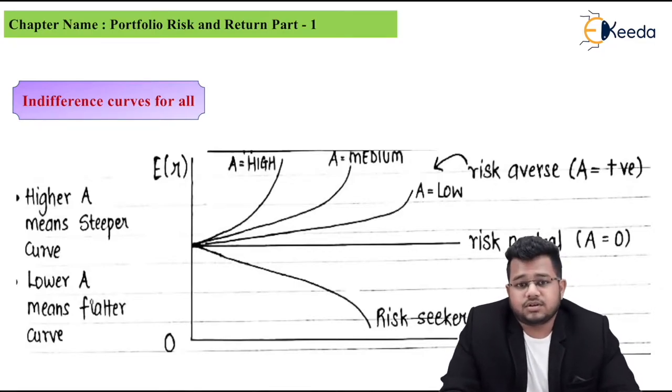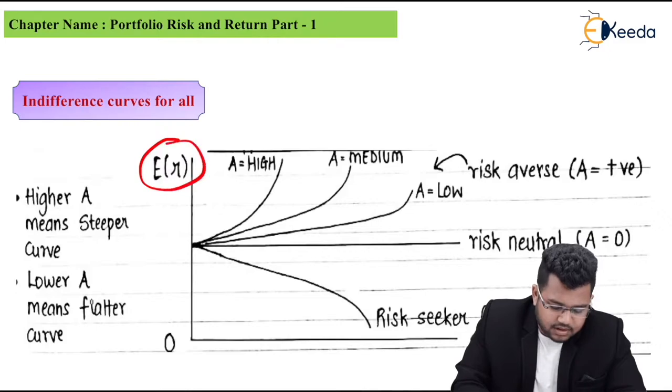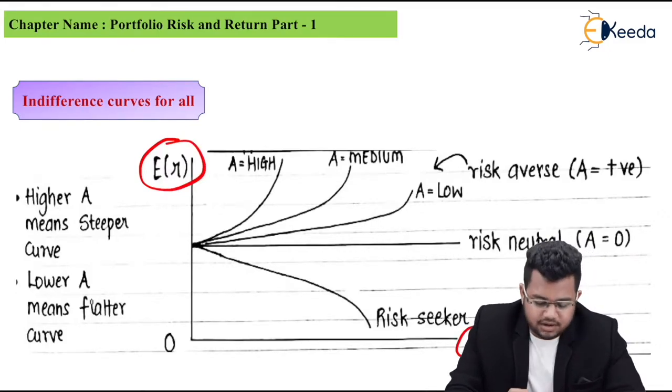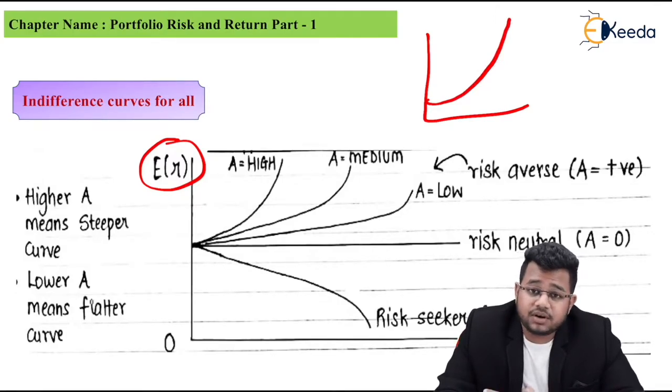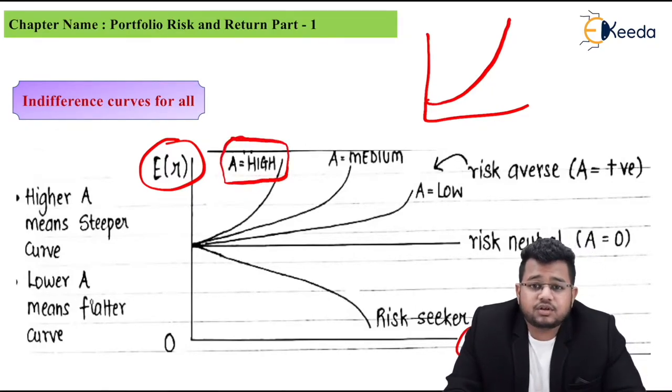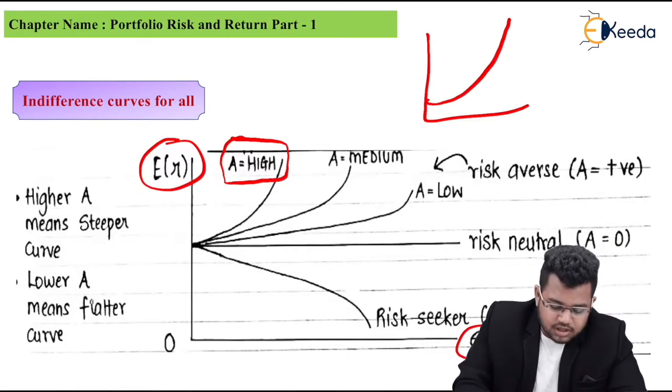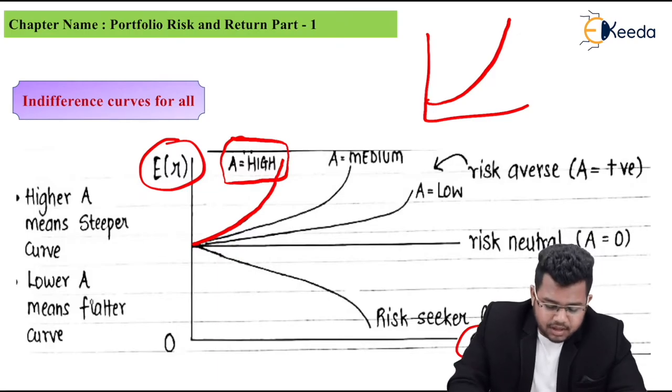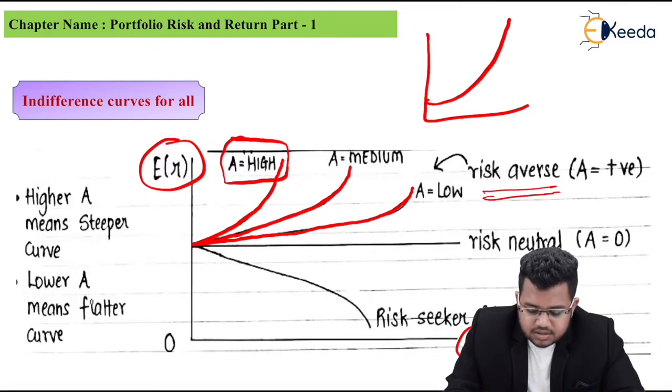Now, indifference curve for all types of investors - not just risk averse, but risk neutral and risk seekers also. Vertical axis ER, horizontal axis risk or standard deviation. You saw an upward curve earlier, which was for risk averse. Now, the first curve where it says A is high - remember A is the risk aversion coefficient, which is positive for risk averse investors, zero for risk neutral, and negative for risk seekers. For risk averse with high A, the curve goes upward. If A is medium, it becomes flatter, and if A is low, it becomes even flatter. These three are for risk averse investors with positive A.